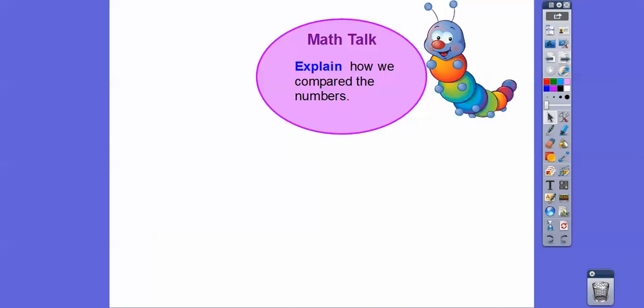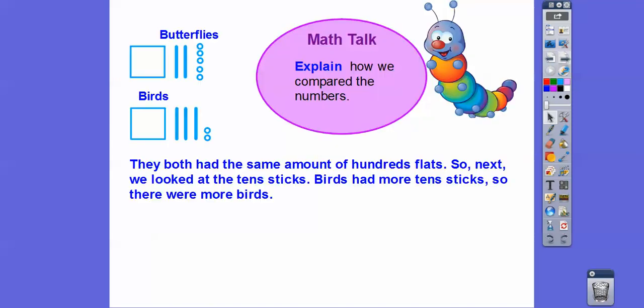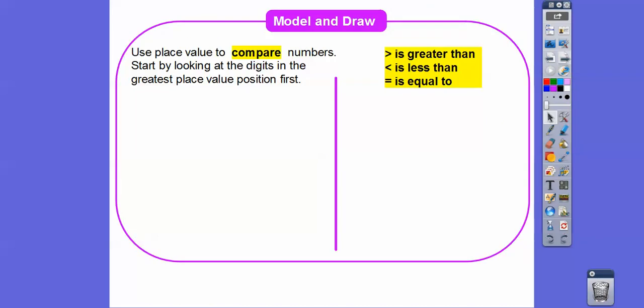And then this is asking, explain how we compared the numbers. So they both had the same amount of hundreds flats, these guys right here. So next we looked at the ten sticks. This one has two. This one has three. So the birds had more ten sticks, so there were more birds. So we don't have to look at the ones. We look at the tens if the hundreds are equal.